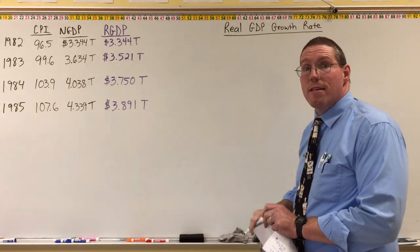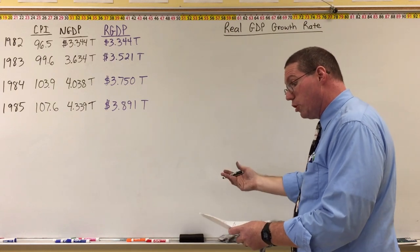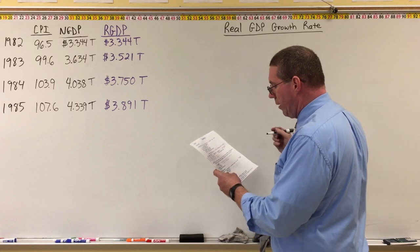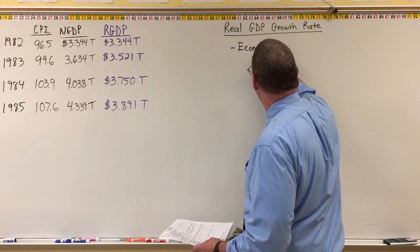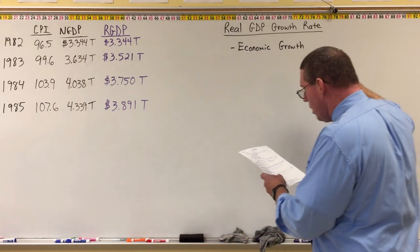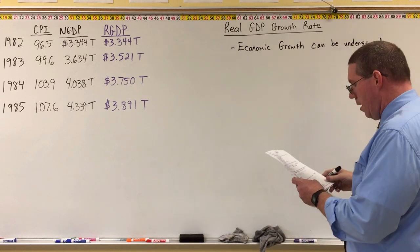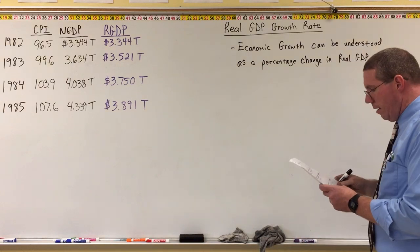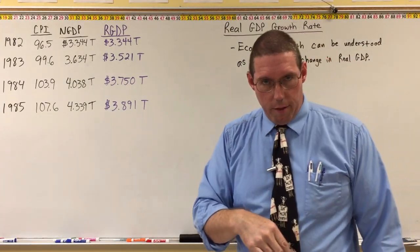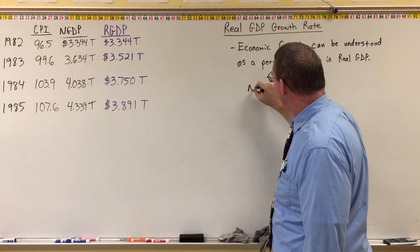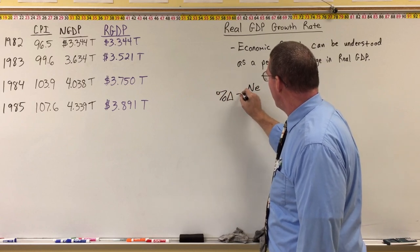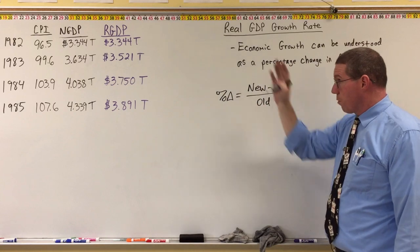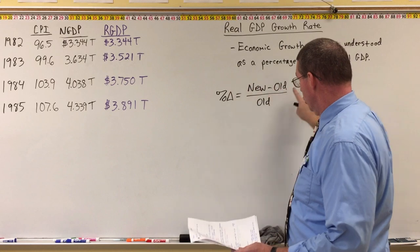So the real GDP growth rate is a percentage, just like the inflation rate is a percentage, just like the unemployment rate is a percentage. Economic growth can be understood as a percentage change in real GDP. Now, we have a generic formula for finding a percentage change: percentage change is equal to new number minus old number divided by old number. We use this for CPI, and now we're going to use it for real GDP. So this is the generic formula.